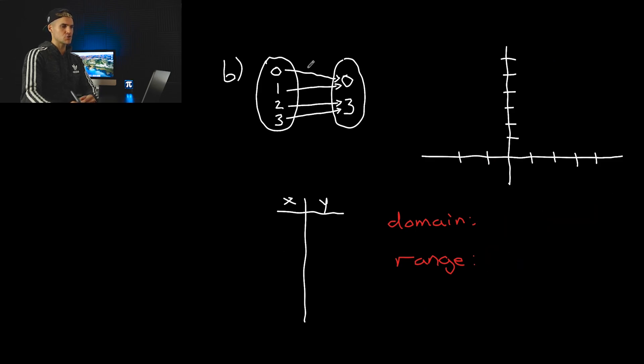Moving on to part B, a new mapping diagram. Again there are four arrows here, so we know there's going to be four coordinates in our table. At this x value of zero, we got a y value of zero at the origin. This x value of one also has a y value of zero. This x value of two has a y value of three, and then this x value of three also has a y value of three.